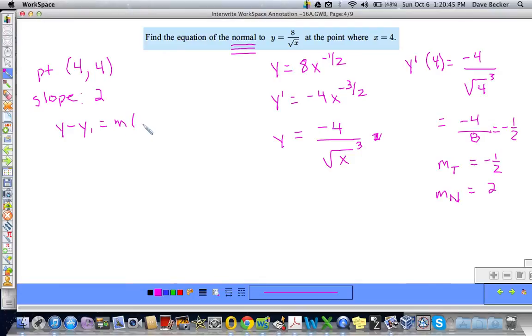Using point slope form, that'll be y - 4 = 2(x - 4). And we clean that up and we get y = 2x - 8 + 4 is going to be -4. So 2x - 4. Remember that. So the normal to y = 8/√x is y = 2x - 4.